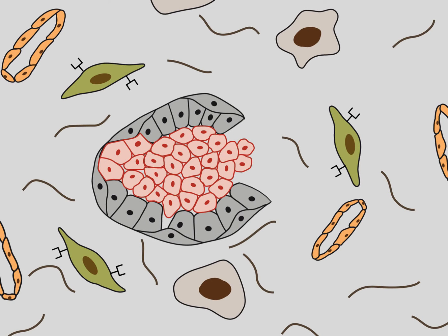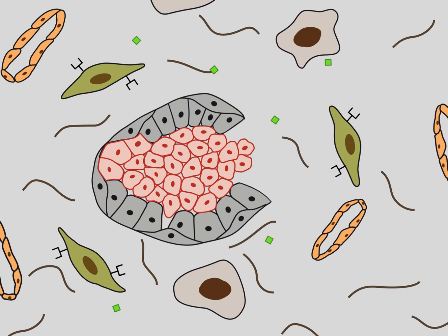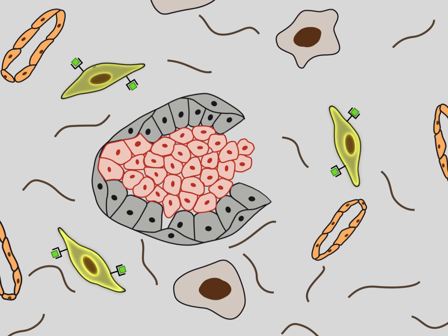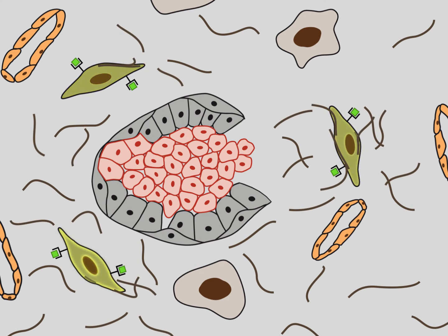TGF-beta stimulates the synthesis of connective tissue. Tumor cells may release TGF-beta, which activates tumor-associated fibroblasts. The activated fibroblasts produce connective tissue components such as collagen 1 and 3. Tumor stroma is the connective tissue produced in response to the growth of solid tumors.